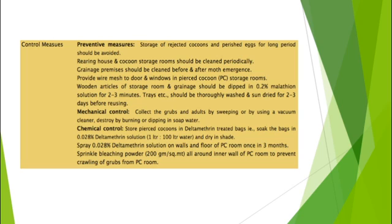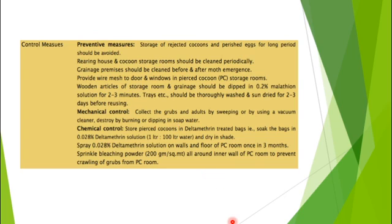Control measures for Dermestes beetle: preventive measures include avoiding storage of rejected cocoons, proper cleaning of the rearing house, and disinfection of the rearing apparatus. Mechanical control includes collecting grubs by sweeping and destroying them by burning. Chemical control includes spraying deltamethrin solution on the walls and floor, or sprinkling bleaching powder. These measures help control the infestation of the Dermestes beetle on silkworm larvae.